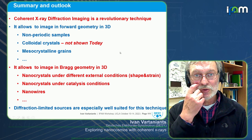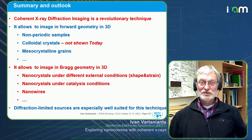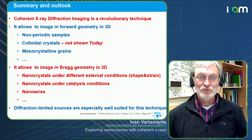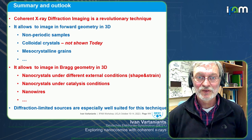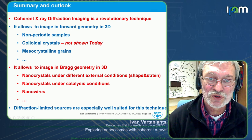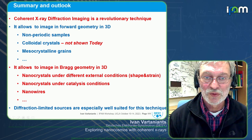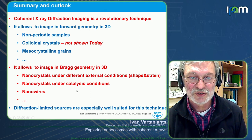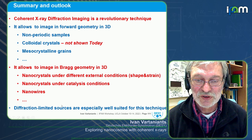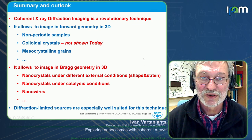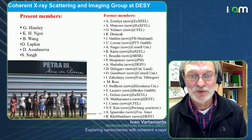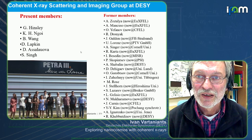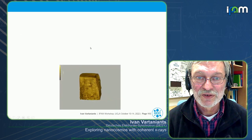In conclusion, coherent diffraction imaging is a really great technique. It allows imaging in forward geometry in 3D for non-periodic samples and mesocrystalline grains; it allows imaging in Bragg geometry in 3D for nanocrystals under different external conditions — shape and strain under catalysis conditions and nanowires. Diffraction-limited sources like PETRA IV are especially exciting. Here is my group, photographed a few years ago before the pandemic, and we need to update it with new members. Thank you very much.